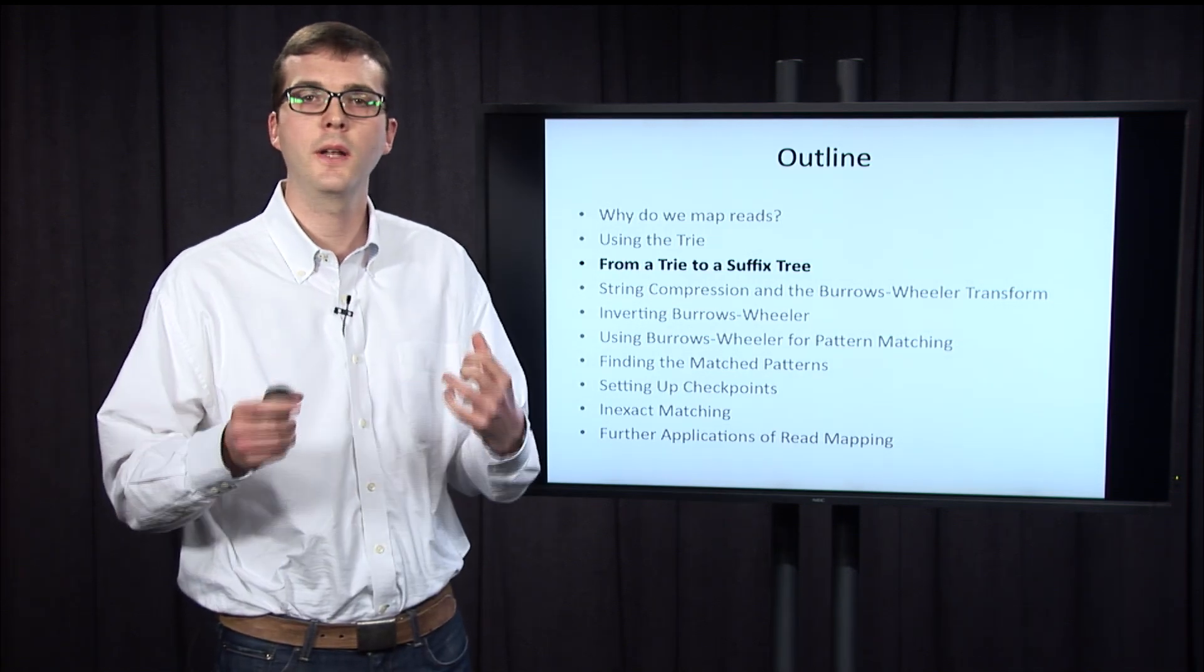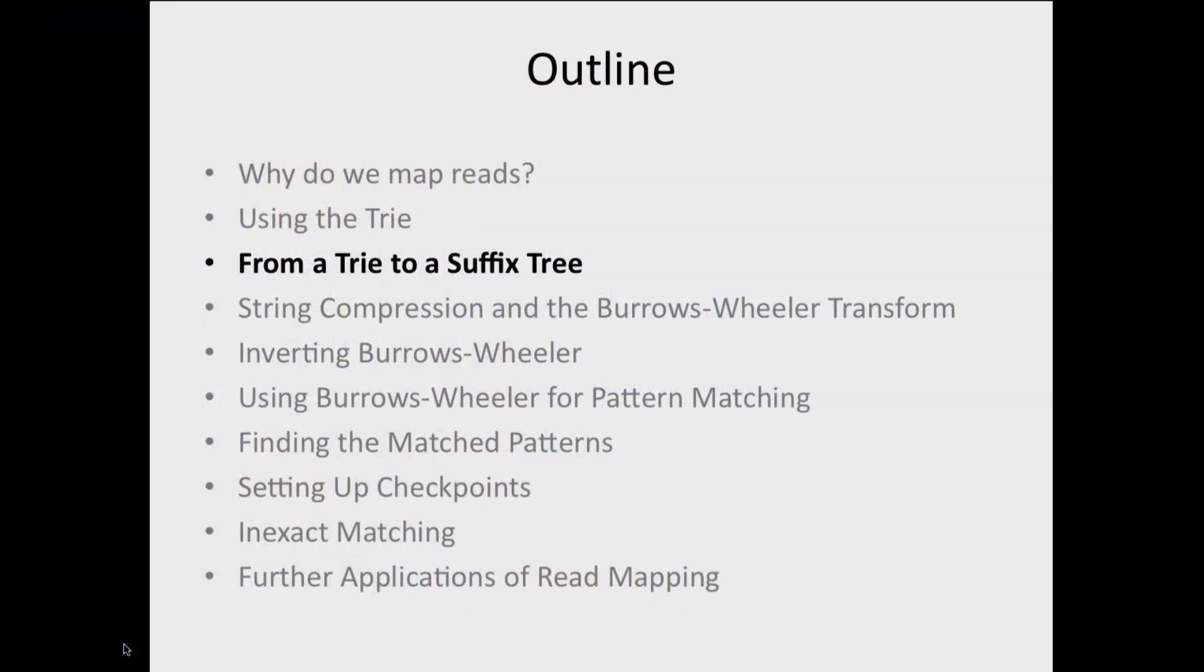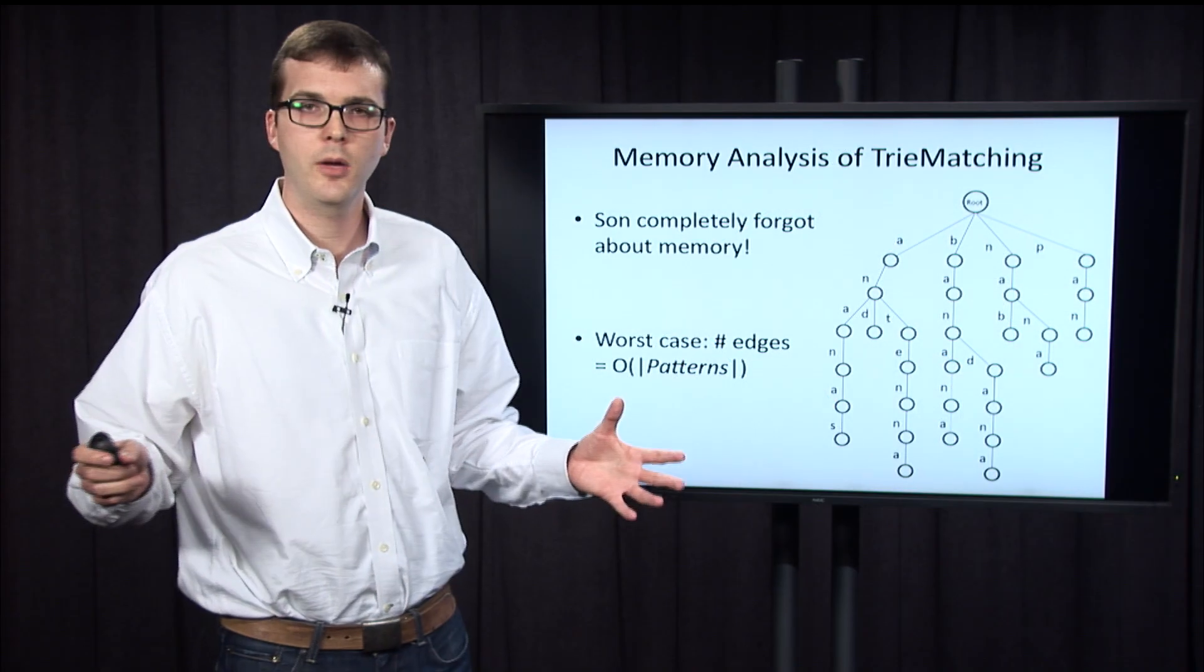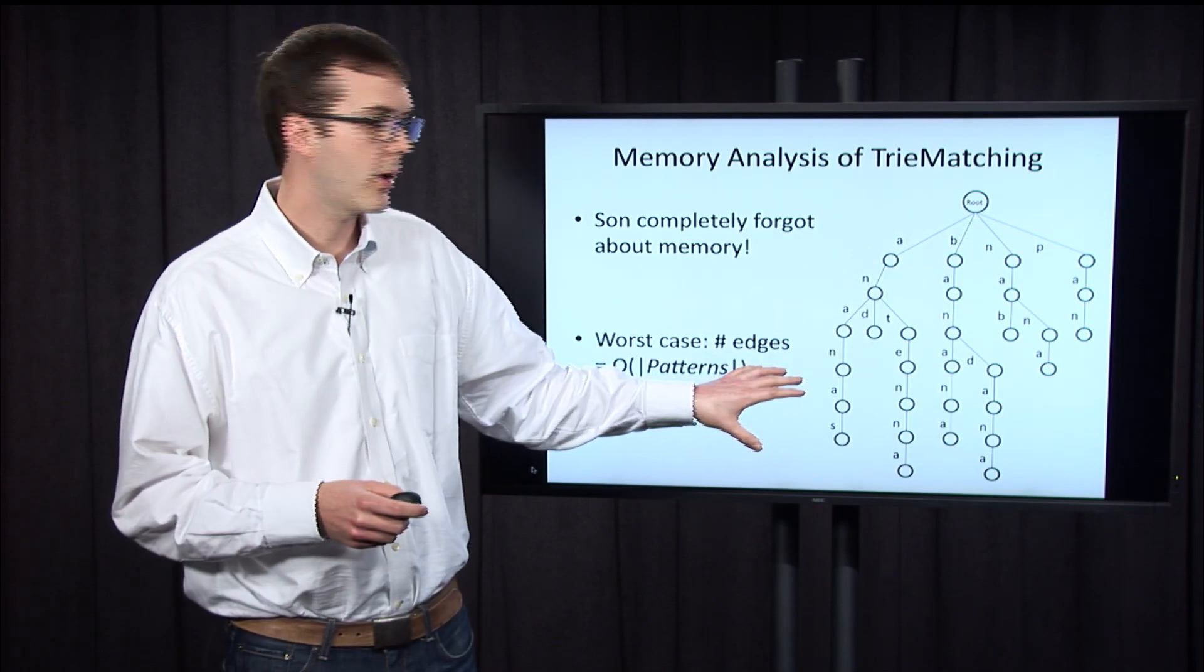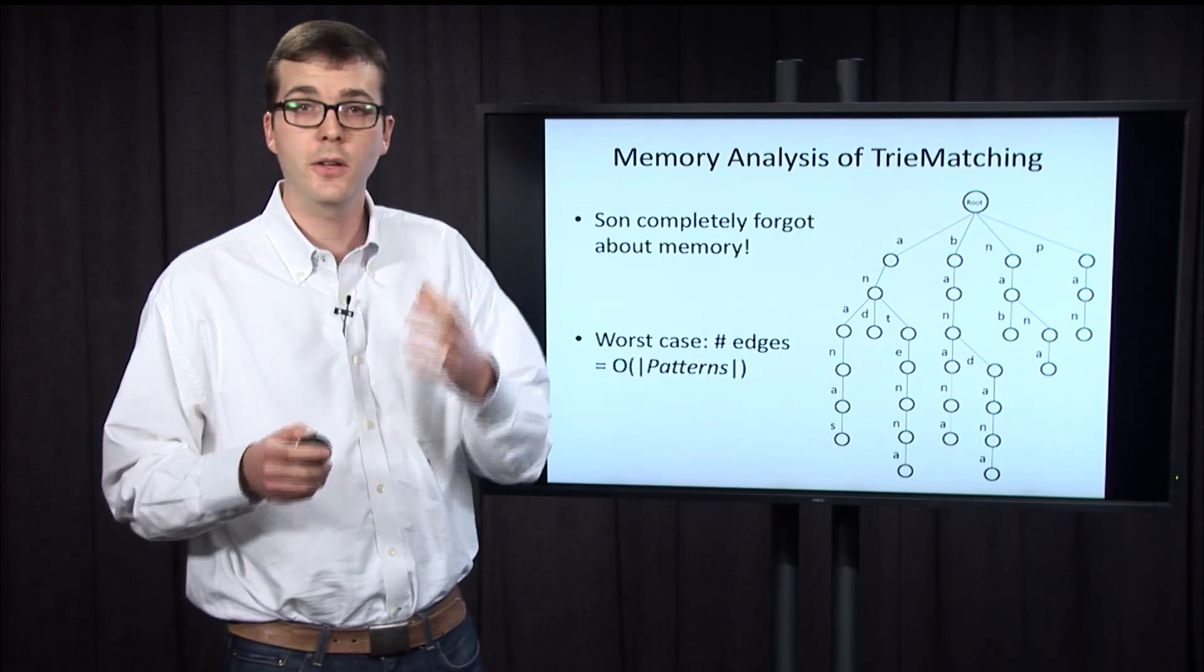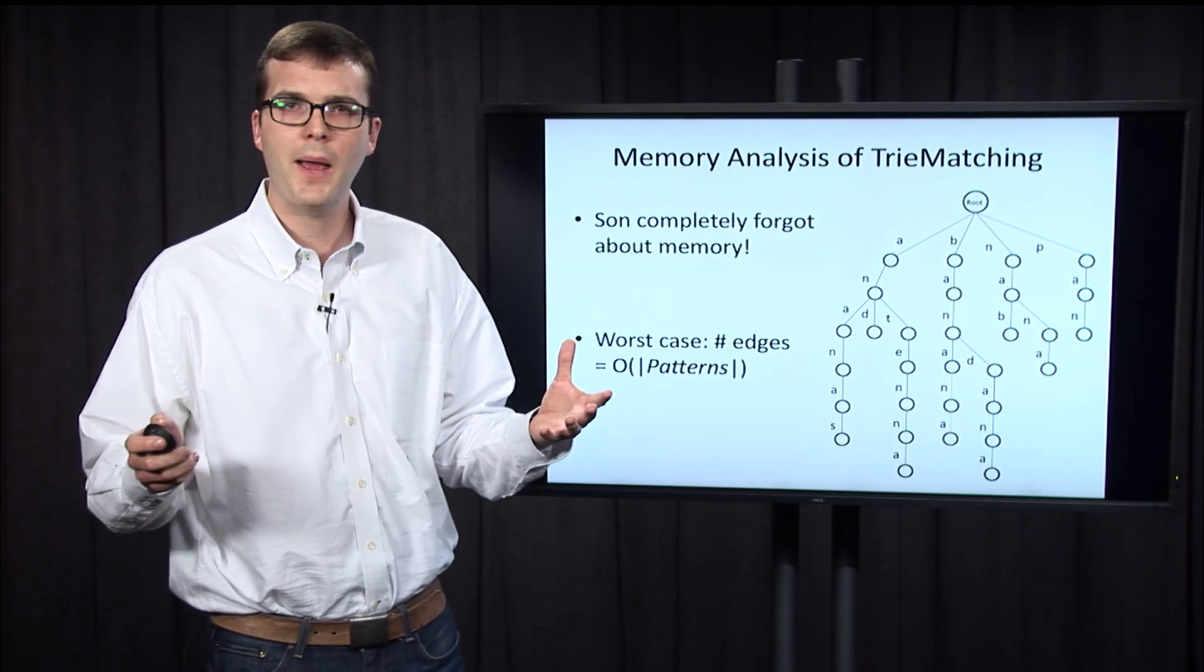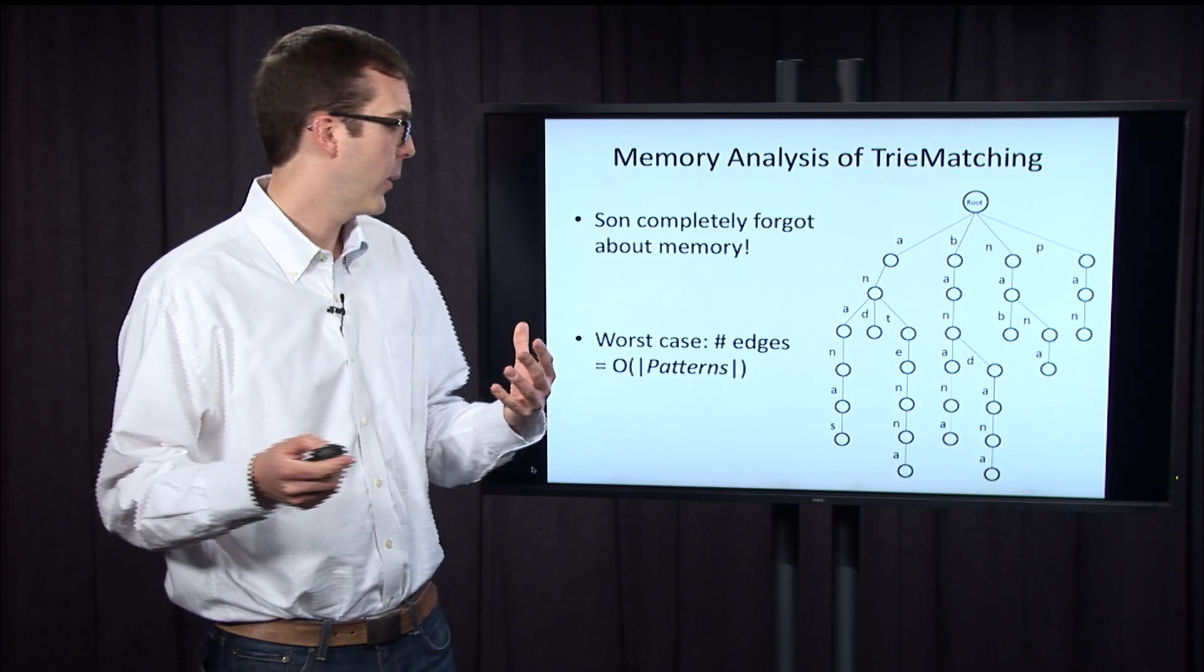In the last section, Sean gave a great runtime speed up to the multiple pattern matching algorithm using a trie. But along the way, he completely forgot about memory. Here's the trie we were working with for the patterns we had. You can verify that the number of edges in this trie is approximately equal to the combined length of all our patterns. In fact, in the worst case, the number of edges in this trie are going to be big O of the combined length of all patterns. This is not necessarily great because the combined length of patterns may be 40 or 50 times the length of the genome. So that's a huge amount of memory that we're going to have to use.